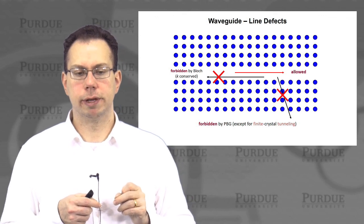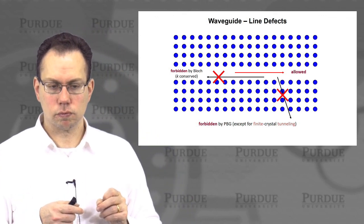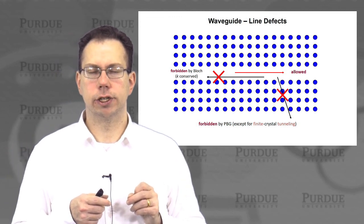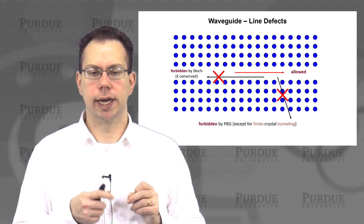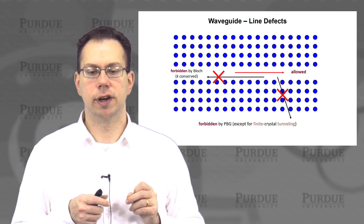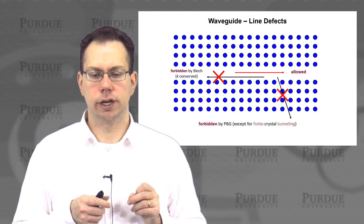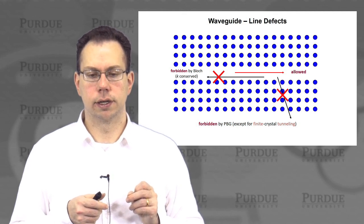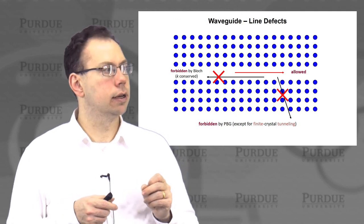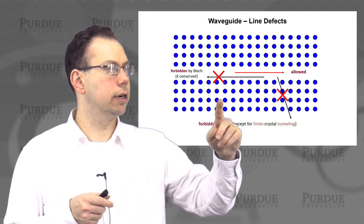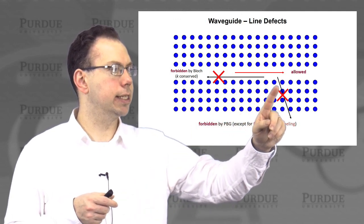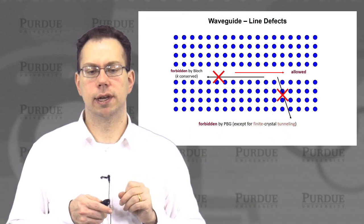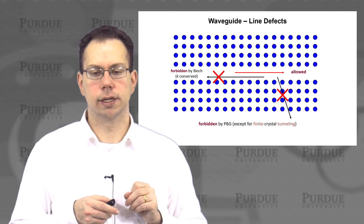An interesting contrast between photonic crystal waveguides and conventional index-guided waveguides is that defects in the structure don't necessarily cause a great deal of scattering. The reason is that if the photonic crystal is large enough, any mode that gets scattered is actually forbidden to propagate through the photonic crystal, giving you some tolerance to scattering.